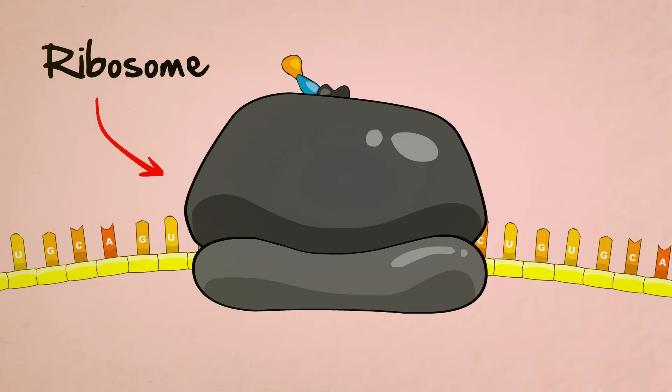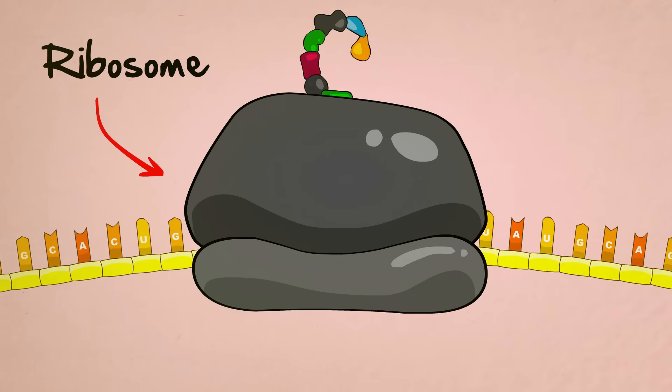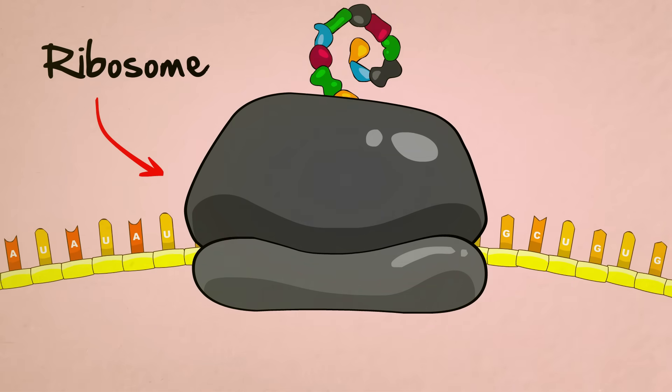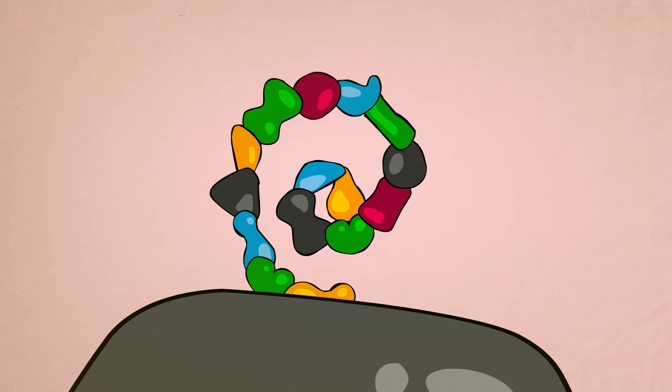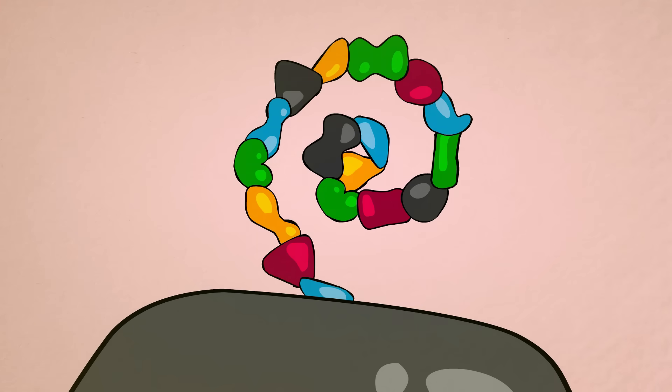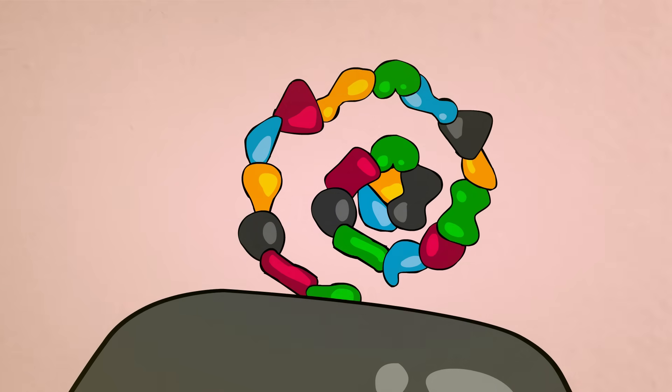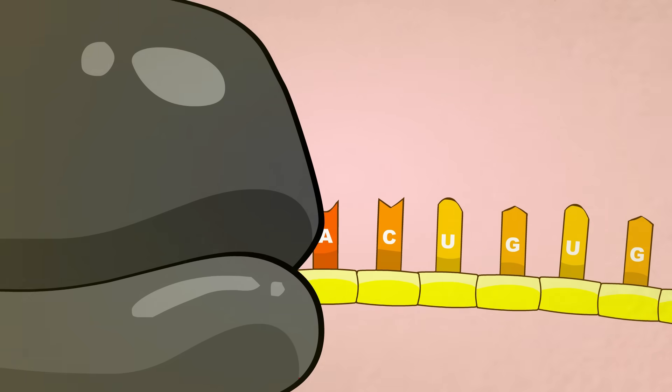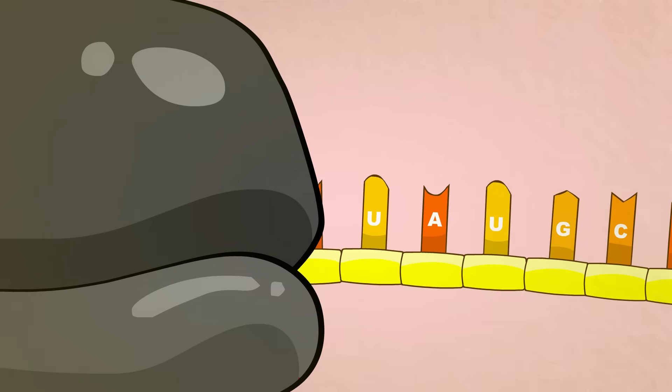Ribosomes are protein building machines. They read the RNA code three letters at a time, suck amino acids out of their surroundings, and stick them together in a chain according to the RNA code. As the chain grows, it bends, it folds, and it sticks to itself to form a perfectly shaped protein. Every three letters of the RNA code tell the ribosome which of the 20 different kinds of amino acids should be added next.